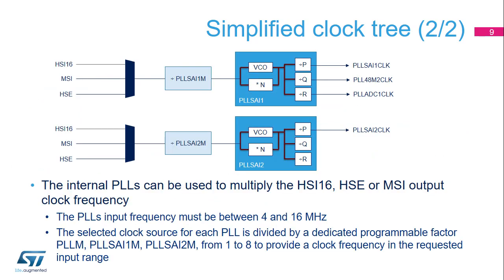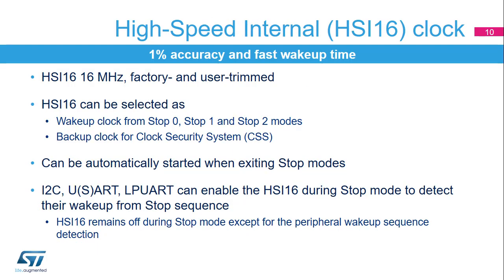The two additional PLLs, called PLLSAI1 and PLLSAI2, have the same input stage. The input clock is either HSI16, MSI, or HSE. They can be used to multiply the frequency of these reference clocks. The PLL input frequency must be between 4 and 16 MHz. The three outputs of PLLSAI1 are available as root clocks for SAI, USB, and ADCs. PLLSAI2 has a unique output called PLLSAI2CLK that can be used as a root clock for SAI.